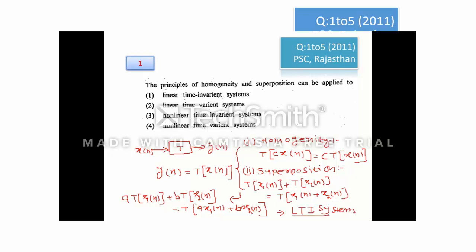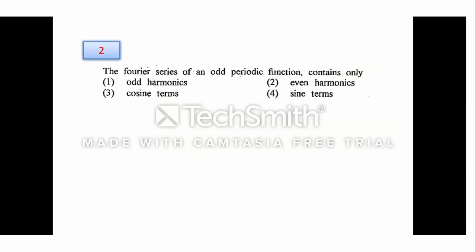Question number 2: the Fourier series of an odd periodic function contains which of the following terms — odd, even, cosine, or sine? We should remember that for an odd periodic function, the Fourier series will always contain only sine terms. An odd function satisfies x(-t) = -x(t), while an even function satisfies x(-t) = x(t). For an even function, the Fourier series contains a DC term and cosine terms.